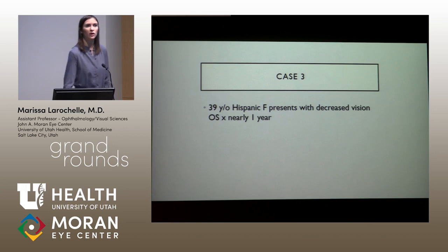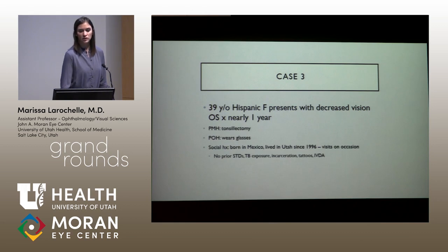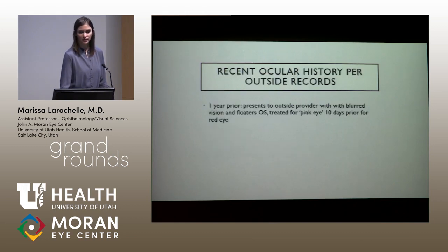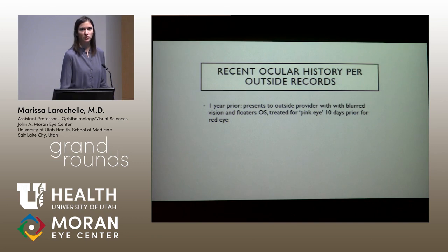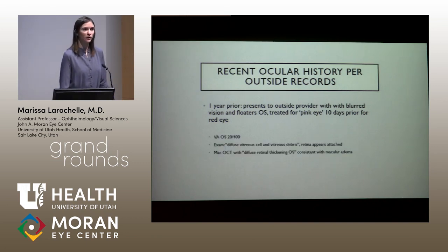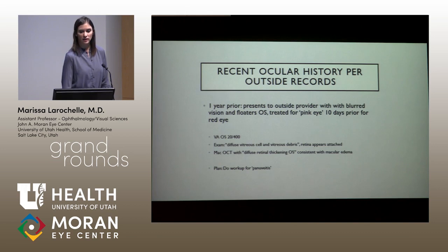A different case with a different outcome — I presented this last month at Grand Rounds for Morbidity and Blindness. A 39-year-old woman came to us a year after her symptoms had started, with decreased vision in the left eye and a non-contributory medical history; she was from Mexico. Looking at outside records, a year before she had presented with floaters and blurred vision, what someone called pink eye — so anterior chamber reaction, redness, and pain. Vision was 20/400. They noted diffuse vitritis and diffuse retinal thickening on OCT consistent with macular edema, and planned a pan-uveitis workup.